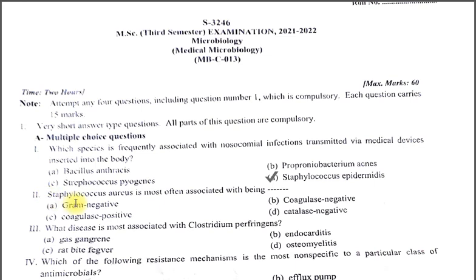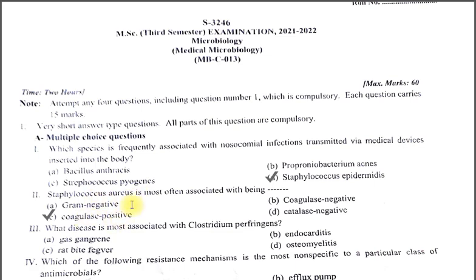The second MCQ: Staphylococcus aureus is most often associated with being — A. Gram-negative. B. Coagulase-negative. C. Coagulase-positive. D. Catalase-negative. The correct option is C, Coagulase-positive. Staphylococcus aureus is coagulase-positive while other species are coagulase-negative, so they are called CoNS.